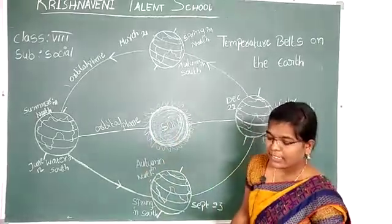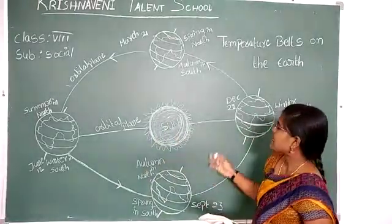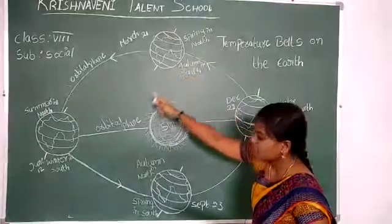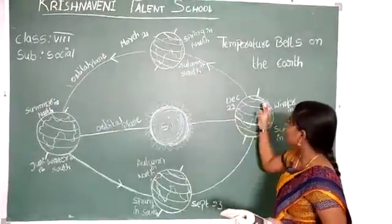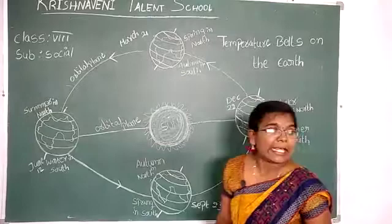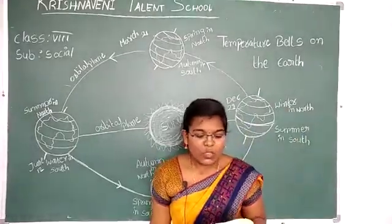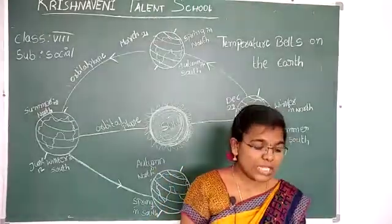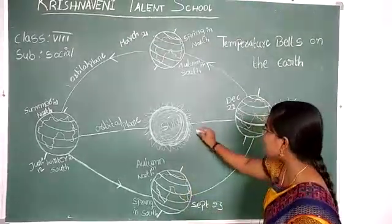Let us see how the earth's spherical shape and its axis affect temperature. The earth is spherical in shape. When solar rays strike the earth's surface, they fall directly on the portion which faces the sun directly.